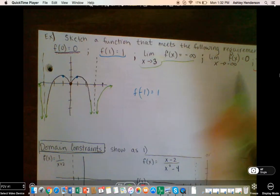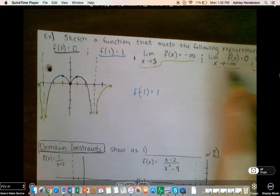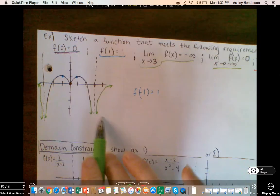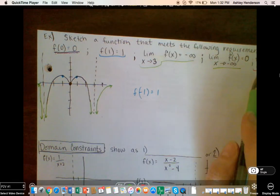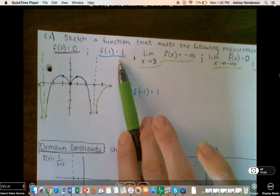And then we've met all of our domain restrictions. So domain, domain, limit, even, f of 1 and f of 0. So that one's all done.